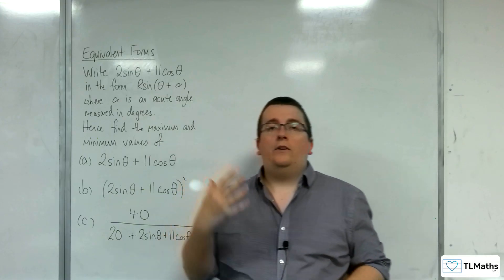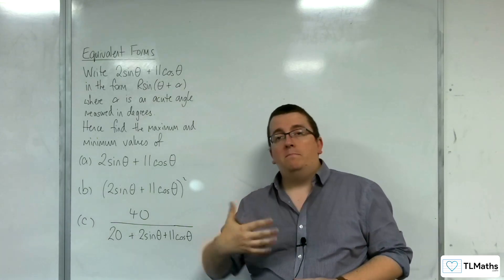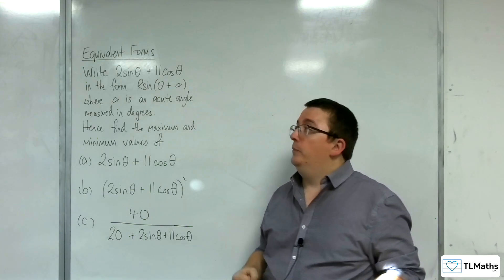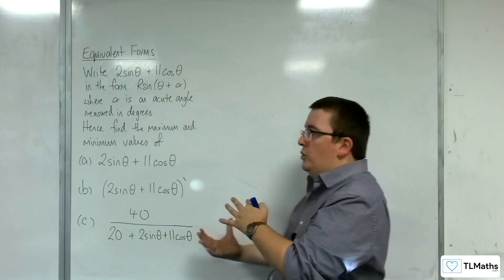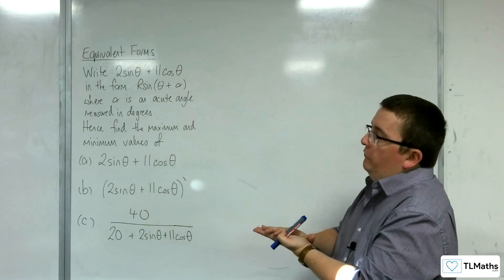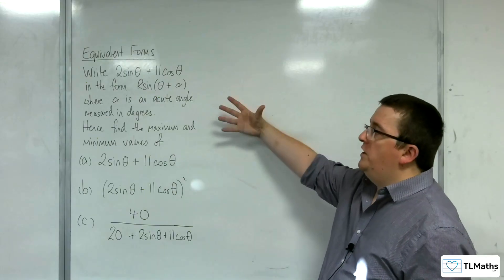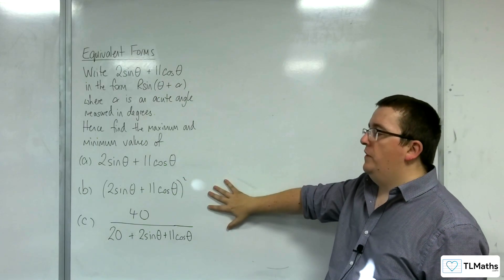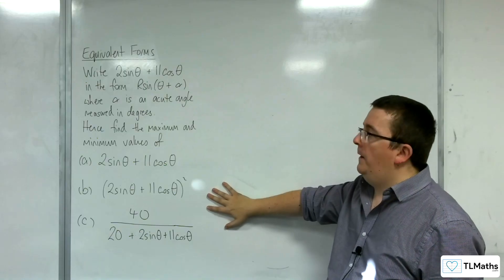In this video we're going to be looking at an example of finding the maximum and minimum values of expressions using equivalent forms. So it's quite a traditional question that can come after having found the equivalent form. So what we're going to do is we're going to find the equivalent form first, then we're going to find the maximum and minimum values of these three expressions.